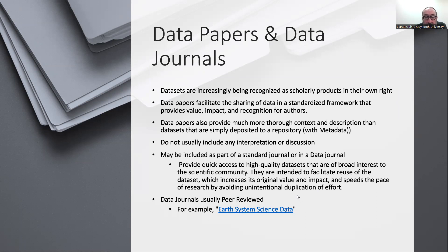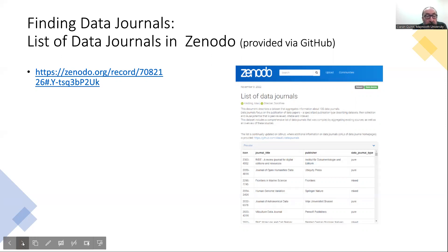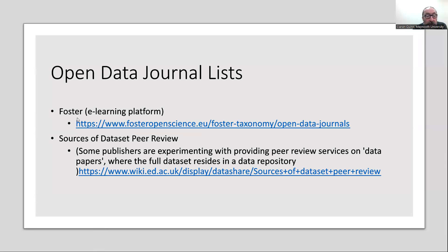Data-only journals would have nothing but data papers. They provide quick access to high quality datasets of broad interest to the scientific community, intended to facilitate reuse of the dataset, increase its original value and impact, and speed the pace of research by avoiding unintentional duplication of effort. Data journals are usually peer reviewed, though not always — just as an example, there's Earth System Science Data. If you want to find data journals, you can go into Zenodo, which has a list of data journals. If you're looking for examples of journals to publish in, you can find them there. There's also listings of open data journals — FOSTER e-learning, for example, has a good list. And there are also sources of dataset peer review, where some publishers are experimenting with providing peer review services on data papers where the full dataset resides in a data repository.